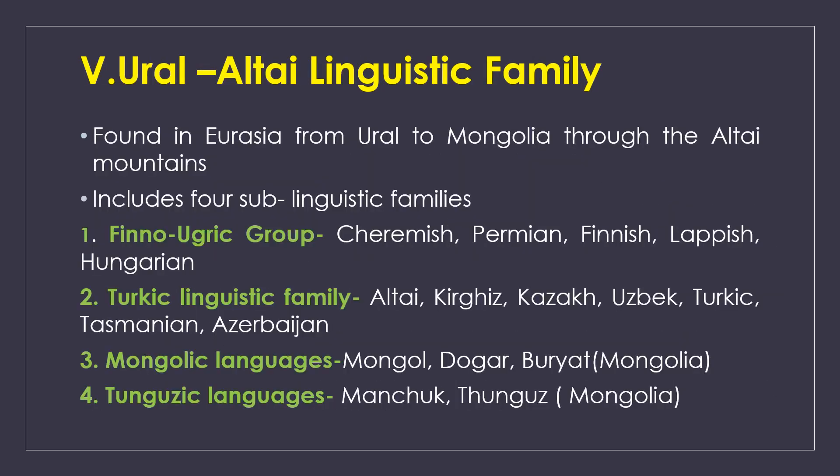The Ural-Altaic linguistic family is named after the Ural Mountains. It is divided into four groups: the Finno-Ugric group — including Cheremis, Permian, Finnish, Lappish, and Hungarian; the Turkic group — including Kyrgyz, Kazakh, Uzbek, Turkmen, and Azerbaijani; the Mongolian group — including Mongol, Dogur, and Buryat; and the Tungusic group — including Manchu and Tungus.